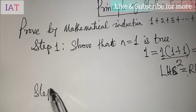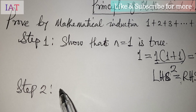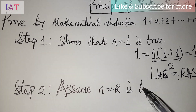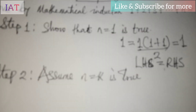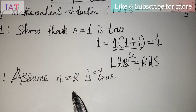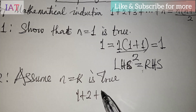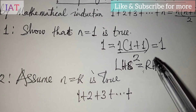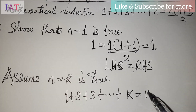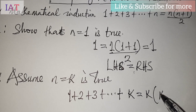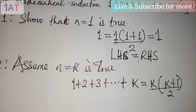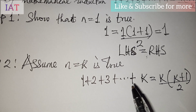The second step is about assumption — we assume that n equals k is also true. So we replace n with k: one plus two plus three up to k equals k(k+1) all over two. Anything made by assumption we leave in that form. We conclude that n equals k is assumed to be true.